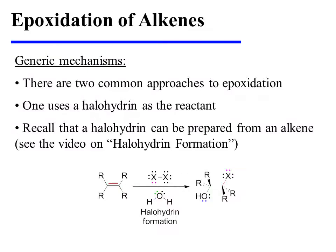There are two common approaches to epoxidation. One uses a halohydrin as the reactant. Recall that a halohydrin can be prepared from an alkene — it may be useful to see the video on halohydrin formation. The reaction treats an alkene with a halogen, namely chlorine or bromine, in water, which is a nucleophilic solvent. This results in the addition of both a halogen and a hydroxyl group across the alkene, hence the name halohydrin.